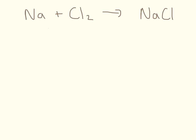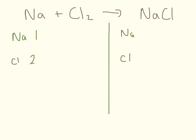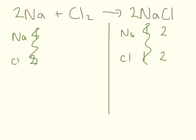Sodium and chlorine here being turned into sodium chloride. Again a line down the middle: sodium and chlorine on each side. On the left I have one sodium and two chlorines; on the right I have one sodium and one chlorine. My chlorines are unbalanced, so I'll pop a two in front of NaCl — giving two sodiums and two chlorines on the right. Now my chlorines are balanced but my sodiums are unbalanced, so I put a two in front of sodium on the left. That makes two sodiums on each side, and everything is nicely balanced.